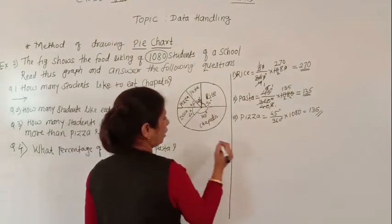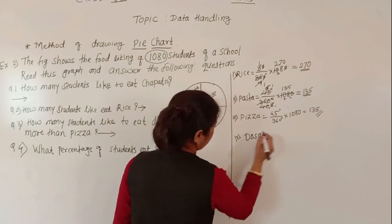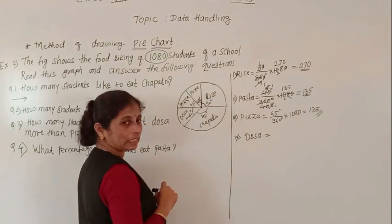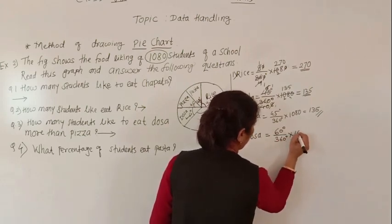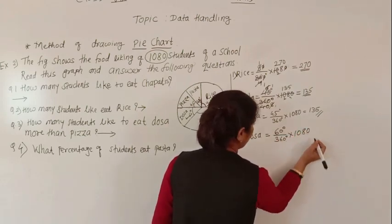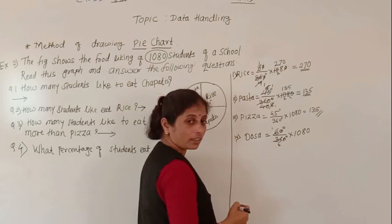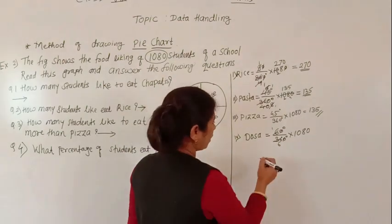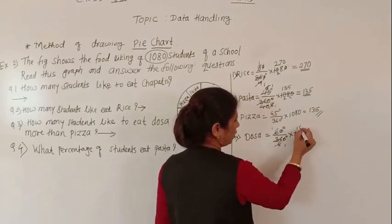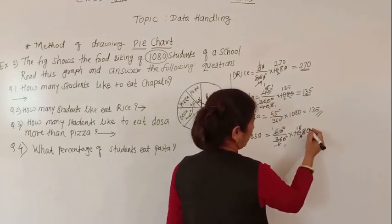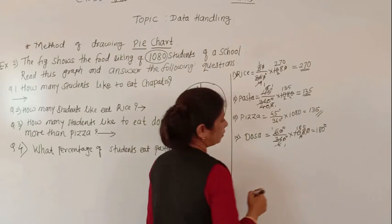For dosa: 60/360 × 1080. The zeros cancel, giving 6 × 108 / 36. Simplifying: 6 sixes are 36, 6 eights are 40 — working through gives 180. So 180 students like to eat dosa.